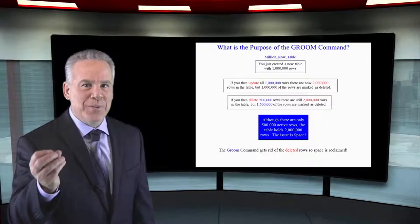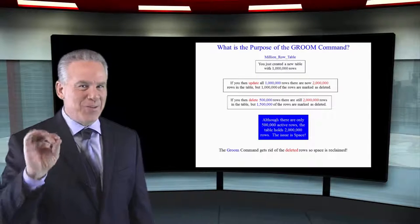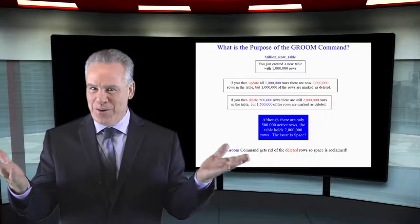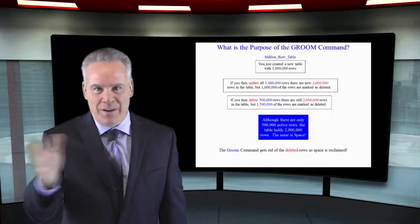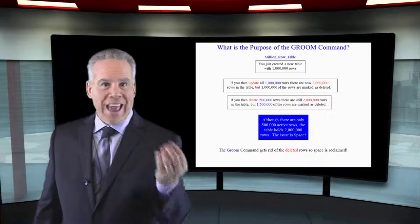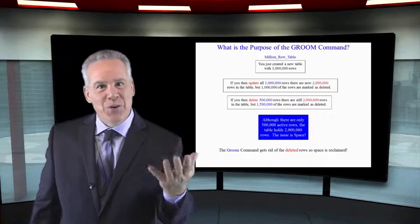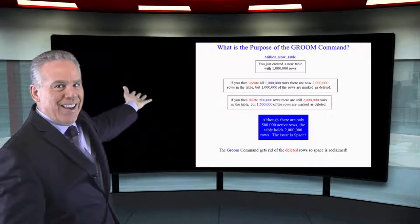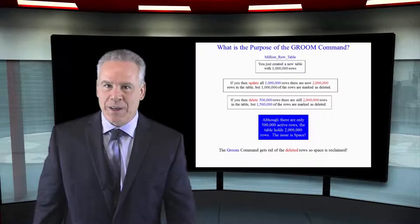Then you updated all one million rows. So now there are two million rows in there. A million of them got the delete X ID taken care of. You've only got a million active rows but two million physical rows. It's getting real busy in there and there's a lot of wasted space.